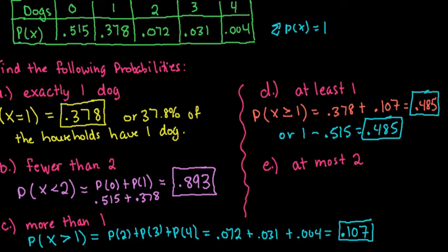For the last one, we're looking for the probability of having at most 2. At most 2 means less than or equal to, so X has to be less than or equal to 2. At the very most we want 2.